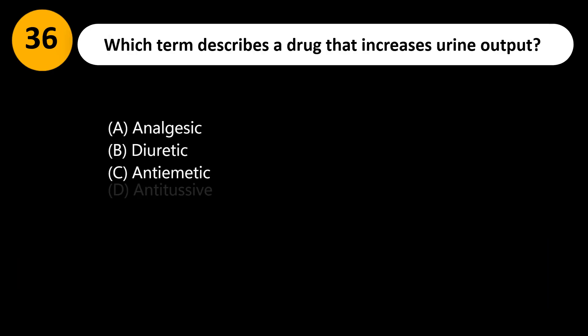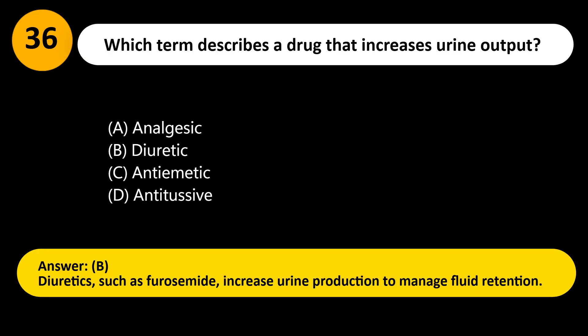Which term describes a drug that increases urine output? A. Analgesic. B. Diuretic. C. Antiemetic. D. Antitussive. Answer: B. Diuretics, such as furosemide, increase urine production to manage fluid retention.